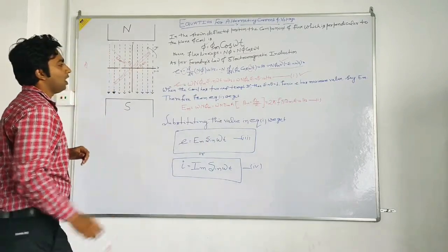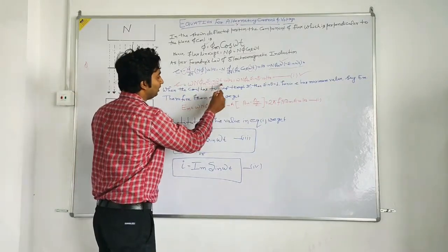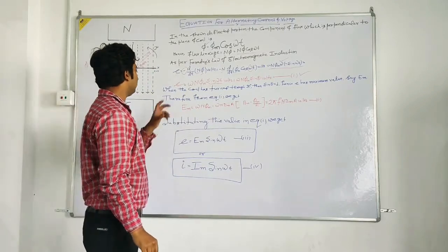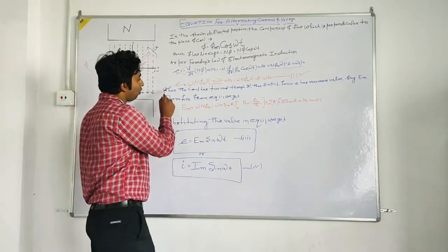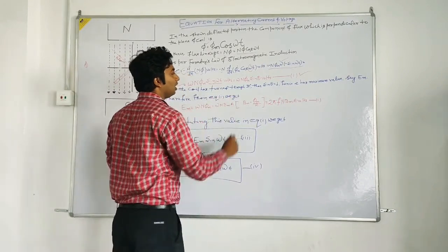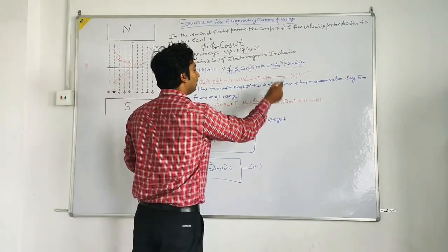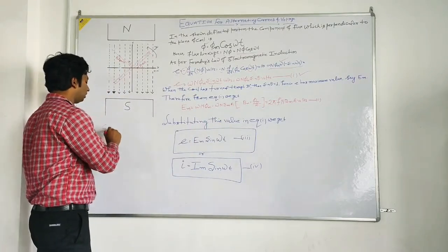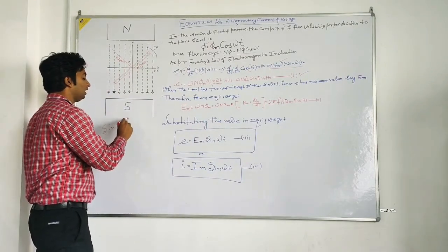Now as we have sin theta here and we know the value of sin theta is maximum when it is 90 degrees. So when the coil has turned through 90 degrees then sin theta equals 1, as we know the value of sin 90 is 1.